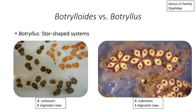In contrast, Botryllus has a different arrangement. Instead of ladder-like or linear, there's a star-shaped or flower-shaped system where each of the oral siphons is external in this star-shaped circle, and the atrial siphons point inward toward the common cloaca, which is in the center of the star or flower. In Southern California, there's Botryllus schlosseri, which has eight stigmata rows in each zooid, and Botryllus tuberatus, which has only four stigmata rows in each zooid.